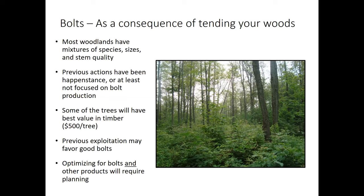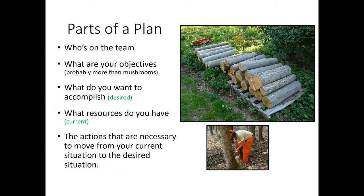Ultimately, you're going to have to do some planning if you want to optimize both bolts and other products. The parts of the plan are relatively simple — everybody plans as a regular part of life. The plan will have a statement of who's on the team: probably you, a spouse or partner, siblings, children, or parents. They don't have to be owners of the property, but they should have a strong interest in what's happening and be included as part of that team.